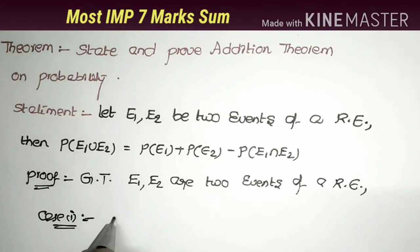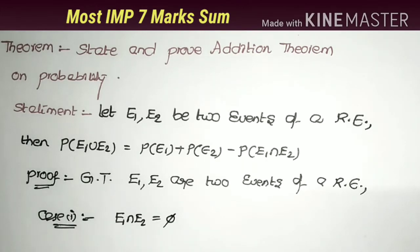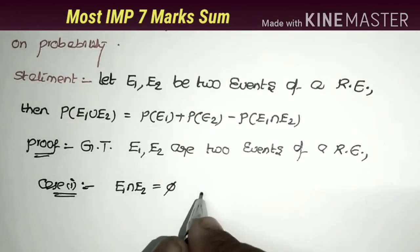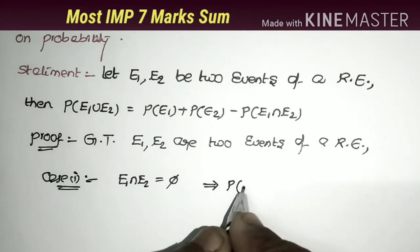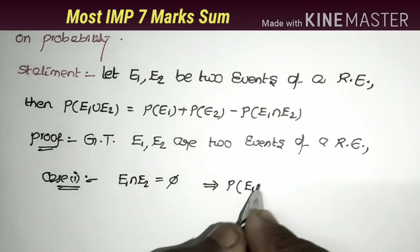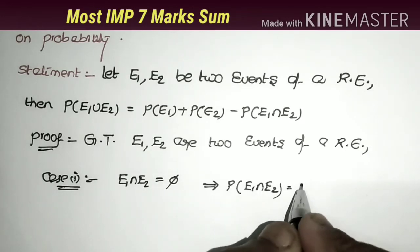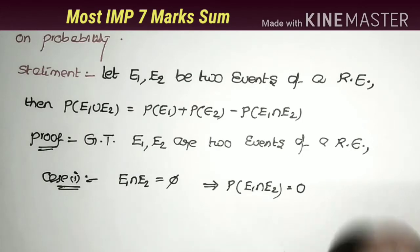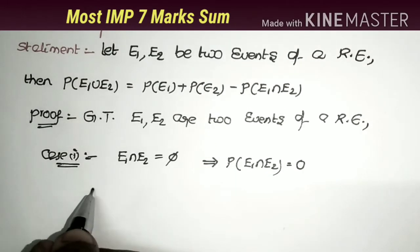Case 1: E1 ∩ E2 = null set. When E1 ∩ E2 equals the null set, the probability value is equal to 0, because a null set has no elements — the number of favorable cases is 0. So P(E1 ∩ E2) = 0.